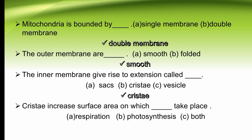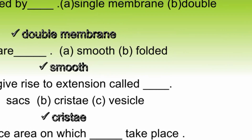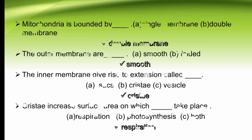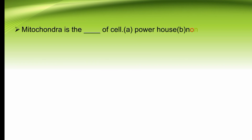Cristae increase surface area on which dash takes place — respiration, photosynthesis, or both. Respiration takes place on cristae. The right option is A, respiration. Our next MCQ: mitochondria is the dash of the cell — powerhouse or non-functional part. Mitochondria is considered the powerhouse of the cell because energy is produced here. The right option is A.